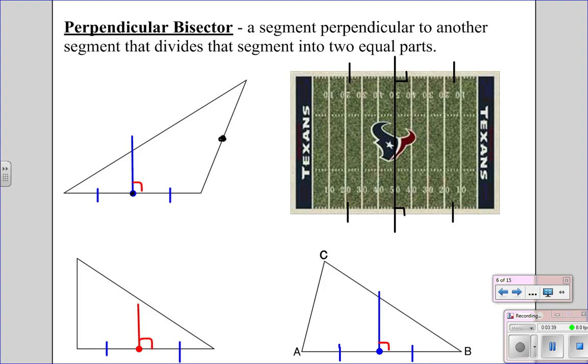So if I found this was the midpoint, then I'd draw the line that goes 90 degrees through that side. Same thing here, midpoint 90 degrees. Midpoint 90 degrees.